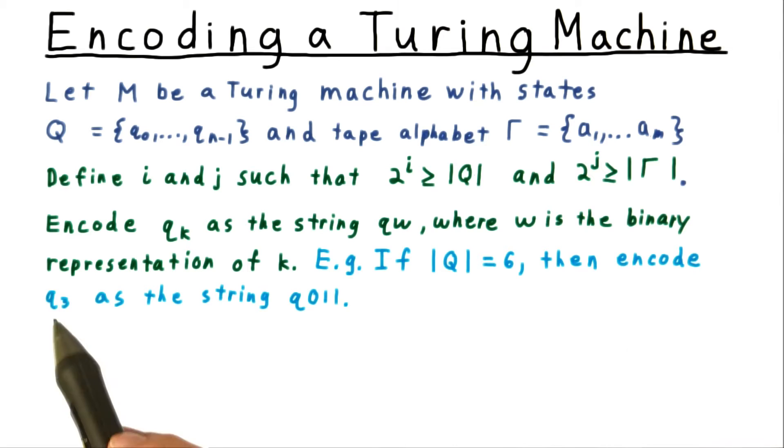And so we would encode q3 as the string q, and then 3 written out in binary, 0, 1, 1. By the way, we'll use the convention that q followed by the binary representation of 0 is the initial state, q followed by the binary representation of 1 is the accept state, and q followed by the binary representation of 2 is the reject state.